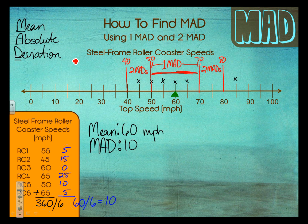Anything outside of two MADs — depending on the context — could be significant. We're talking about roller coaster speed here, so nothing scary. But if we're talking about a patient's heart rate or a student's test score, now we're looking at something's not right. Either someone was exceptional, or if a point is way down low, that's a problem. Anything outside of two MADs is considered abnormal.